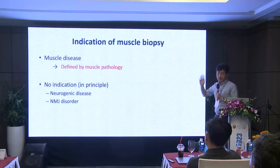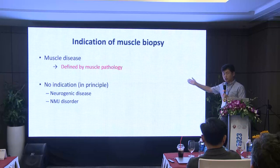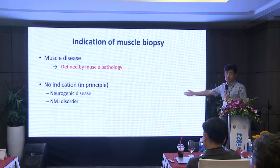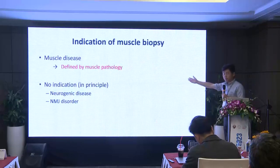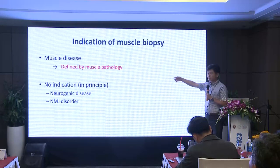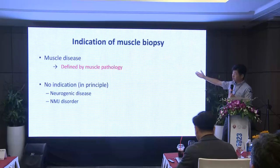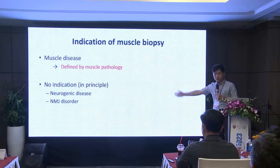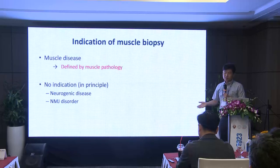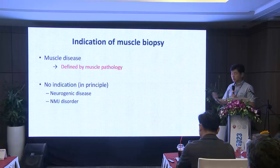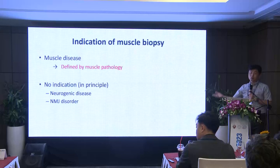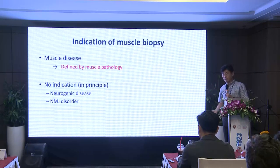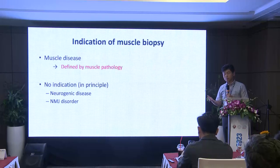Muscle biopsy has to be done to make a diagnosis of muscle disease, but not for neurogenic disease or neuromuscular junction disorders. Muscle disease is defined by muscle pathology, that's why we need muscle pathology for the diagnosis of muscle disease. For neurogenic disease, muscle biopsy can tell us it's neurogenic, but we can't distinguish whether it's ALS, SMA, Charcot-Marie-Tooth, CIDP, or anything else — all we can say is that it's some kind of neurogenic disease.